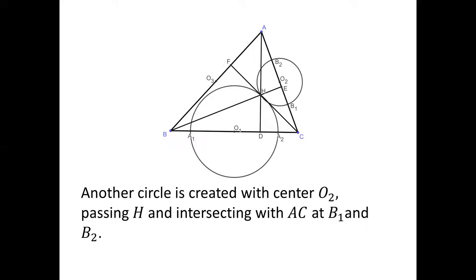We draw another circle with center O2 also passing through H and intersecting with AC at B1 and B2.